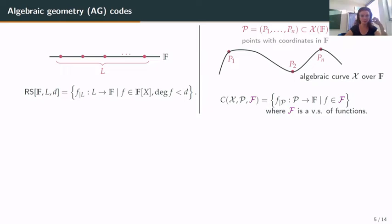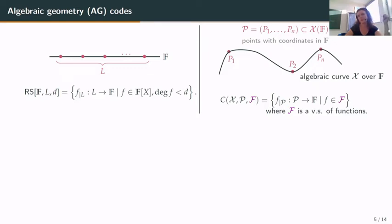The last notion you may not know is algebraic geometry codes, which generalize Reed-Solomon codes. In the Reed-Solomon code, you take L as a subset of your finite field and consider univariate polynomials of bounded degree. To generalize, you can see this set of points as points in the projective line. Taking another curve X over F, you take N points with coordinates in F — P1 to Pn — and an algebraic geometry code is the set of functions from P to F for F running in some vector space of functions on the curve.